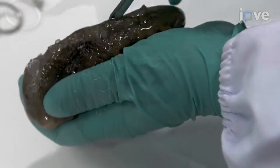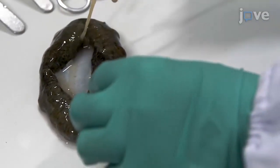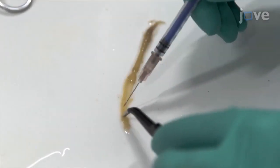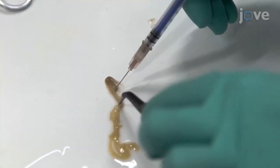After anesthetization, dissect and collect the anterior intestines, then section the tissue samples vertically and remove the inner contents.